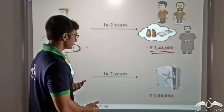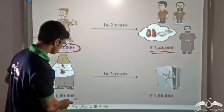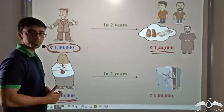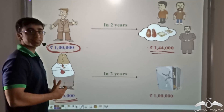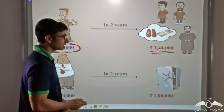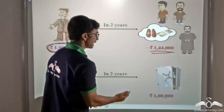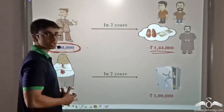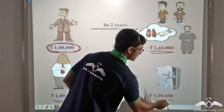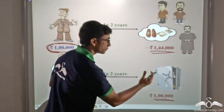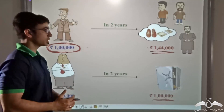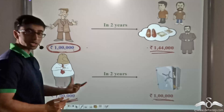Now Sudhir is also in possession of one lakh rupees, but instead of any transactions he is simply keeping this money in a safe, and after two years obviously this money is not growing — it remains fixed at one lakh. So what does Sudhir need to do in order to make his money grow?